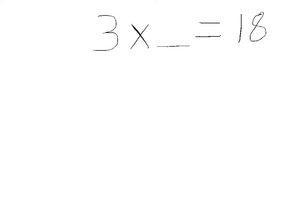Look what we have here. We have a multiplication question, we have our first factor here, we have the product here, but we are missing the factor here. So, 3 times something equals 18.